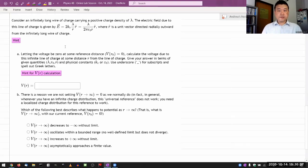All right, so this is the question. Consider an infinitely long wire of charge carrying a positive charge density lambda. And I do like to draw pictures as I read the question to make sure I understood it and I'm not missing anything.